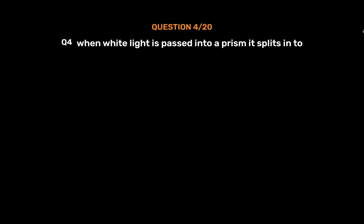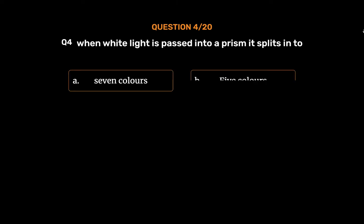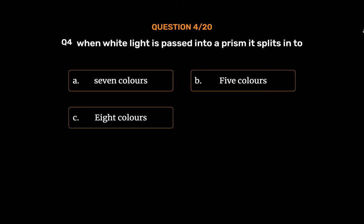Question No. 4: When white light is passed into a prism it splits into — Option A: 7 Colors, Option B: 5 Colors, Option C: 8 Colors, Option D: 3 Colors. The correct answer is Option A: 7 Colors.